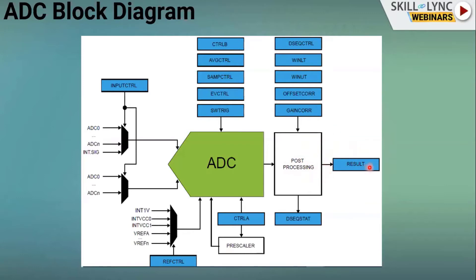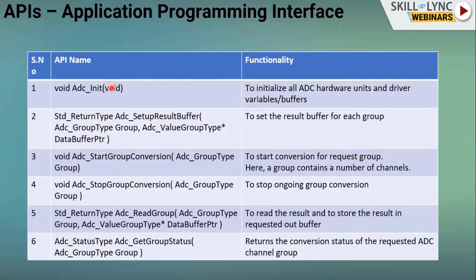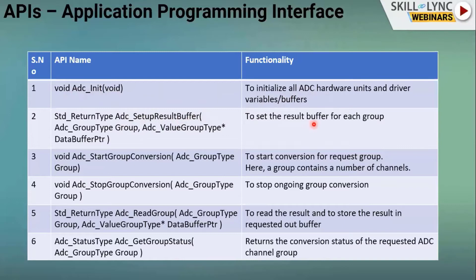The converted values are stored in a result buffer. For the ADC APIs: ADC init initializes the ADC hardware units and driver-related variables or buffers. Set up result buffer sets the result memory location for each group. Start group conversion initiates a group conversion.